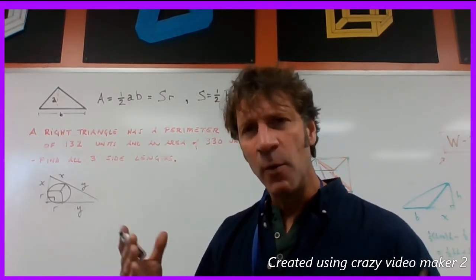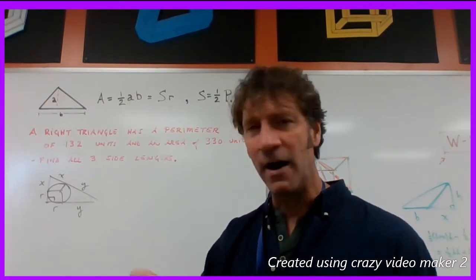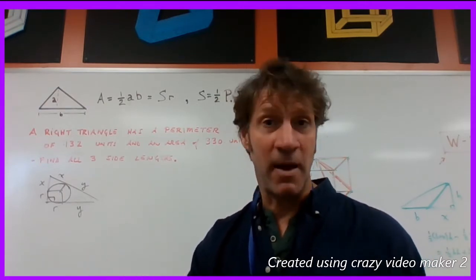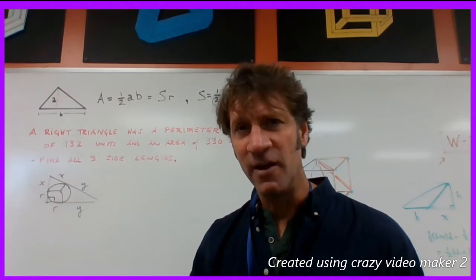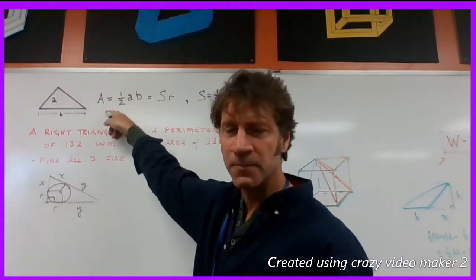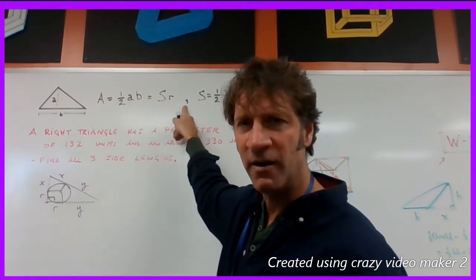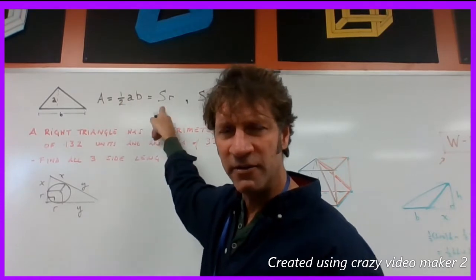As far as finding the inradius goes, we know that our perimeter is 132, so half of that is going to be our semi-perimeter which is 66. So in order to find r we have to divide our area by 66. The area is semi-perimeter times r. 330 is 66 times r. So r is 330 divided by 66.